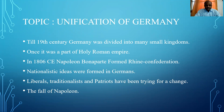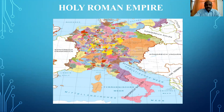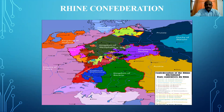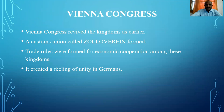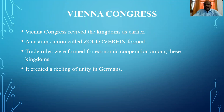After some years, Napoleon was defeated by the European powers. After this Rhine Confederation, there was the Vienna Congress. After defeating Napoleon, all the victorious nations had a meeting in Vienna and discussed the future of these small kingdoms, which had been under Napoleon's control. The Vienna Congress revived the kingdoms as small kingdoms. Also, a customs union called the Zollverein was formed. Trade rules were formed for economic cooperation among these kingdoms, which created a feeling of unity.